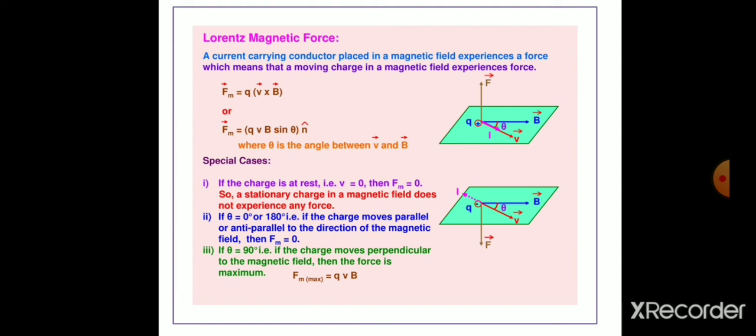If θ is equivalent to 90 degrees, that is, if the charge moves perpendicular to the magnetic field, then the force will be maximum, which is given by F maximum = QvB.